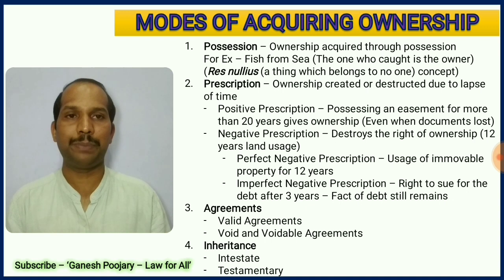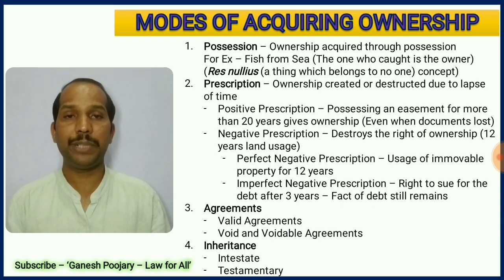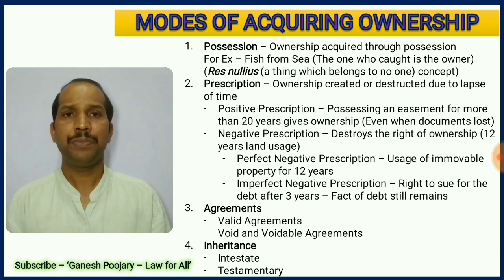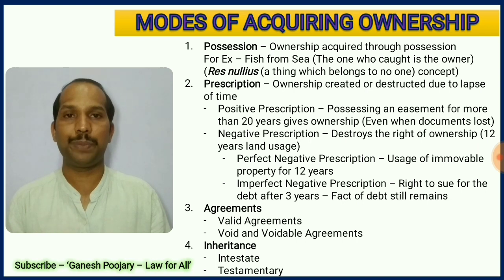The second mode is prescription. There are two types: positive prescription and negative prescription. Prescription is ownership created or destroyed due to lapse of time. For example, positive prescription means if you are staying in a particular location for 20 or more years, you become the owner of that particular land. Whereas if you are not staying in a particular place and somebody else comes and stays there for 12 or more years, they become the owner — destroying your ownership. That is negative prescription.